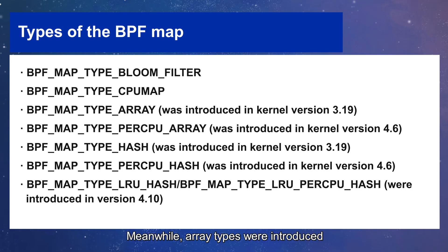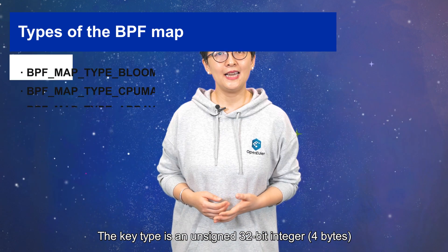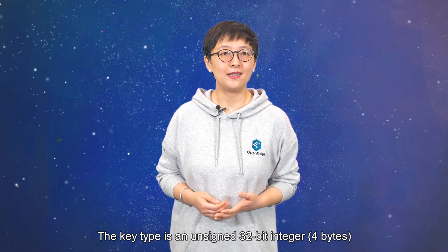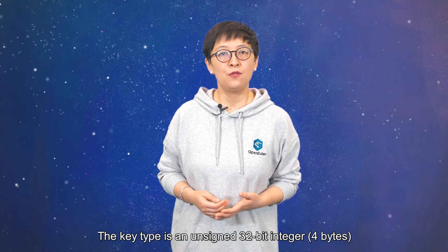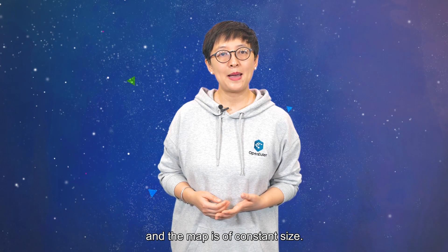Array types were introduced in versions 3.19 and 4.6, respectively. Both of them provide generic array storage. The key type is an unsigned 32-bit integer, 4 bytes, and the map is of constant size.